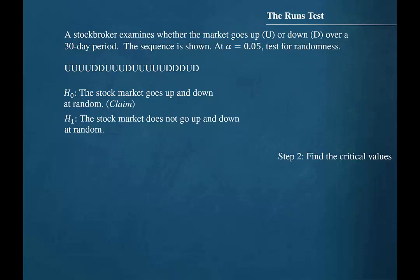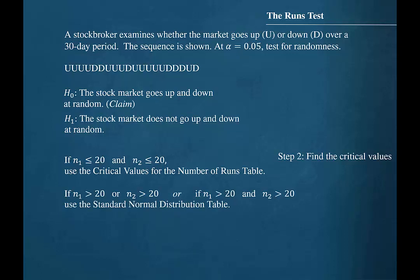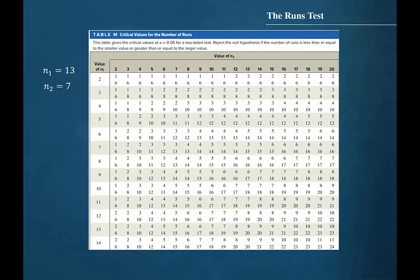Step 2 is to find the critical values. If N1 and N2 are both no more than 20, then we will use the critical values for the number of runs table to find the critical values. However, if N1 or N2 is greater than 20, or if both N1 and N2 are greater than 20, then we will use the standard normal distribution table. We found N1 to be 13 and N2 to be 7, so we will use the critical values for the number of runs table.